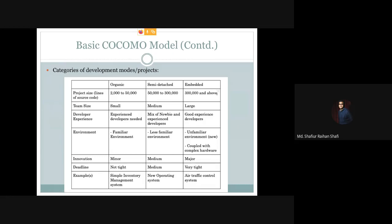In the organic mode, the developers have prior experience — some nominal experience related to this sort of project. The environment is familiar and stable, and the team is small. The project is well understood, so the development environment is familiar and stable. The amount of innovation demanded in this type of project is minor, and the project deadline is very tight.